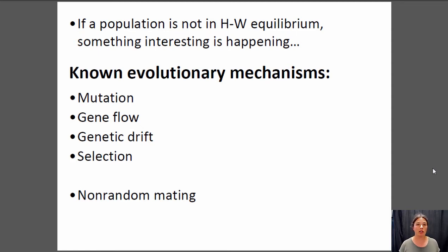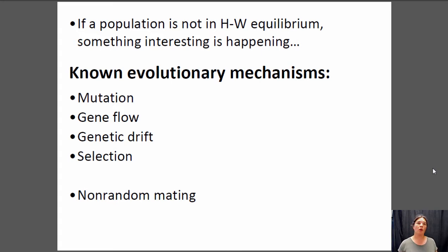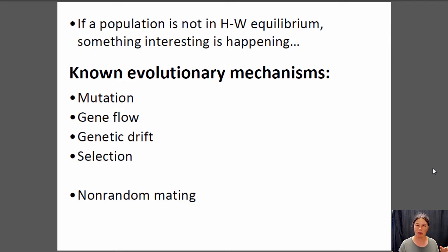There are a number of different mechanisms through which evolution can occur, and a lot of these don't get much attention. The known mechanisms are mutation, which is random changes to the genetic code; gene flow, which is the movement of individuals between populations; genetic drift, which is random changes in allele frequency within a population; selection, which is when environmental pressure causes change in the population; and non-random mating. We're going to go through four of these today — mutation, gene flow, genetic drift, and non-random mating — and save selection for another lecture.